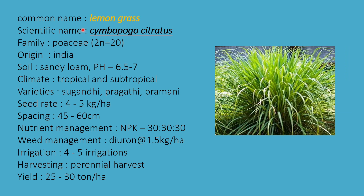The next aromatic crop is lemongrass. Scientific name is Cymbopogon citratus, family Poaceae. Chromosome number 2n = 20, origin India. Sandy loamy soils are required, pH 6.5 to 7. Tropical and subtropical climate is suitable. Varieties are Suganda, Pragati, and Pramani. Seed rate is 4 to 5 kg per hectare, and spacing is 45 to 60 cm.